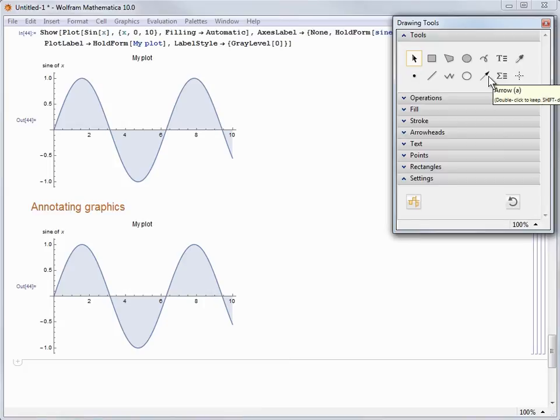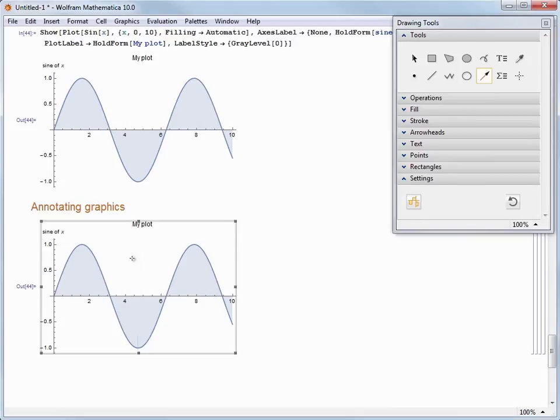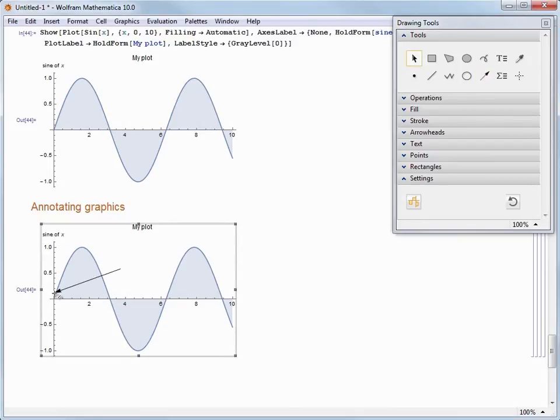So let's add an arrow to our plot to point to the origin. We choose the Arrow tool in the Tools section, and we click and drag to place that arrow. Once we are finished, we can click the arrow to highlight it, and an orange bounding box will be drawn around it to let us know that is what is selected.